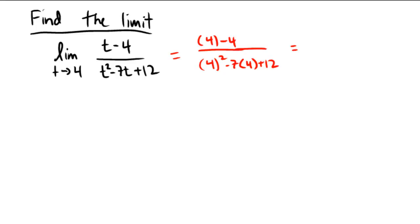4 minus 4 is 0, and that's okay. Zeros in the numerator are okay, but in the bottom we'd have 16 minus 28, which is negative 12, plus 12, which is also 0. So 0 over 0 we're not allowed to do.